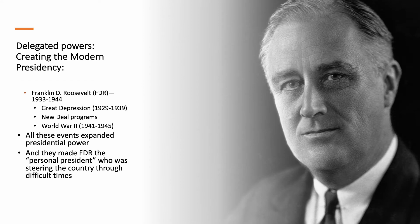The modern presidency really begins with Franklin Roosevelt in the 1930s. Congress did create a couple of agencies in the late 1800s — the Interstate Commerce Commission and the Sherman Antitrust Act — but it really took off in a big way with Franklin Roosevelt's presidency from 1933 to 1944. When he took office in 1933, the country had been in the worst depression in American history — a global depression called the Great Depression, lasting about 10 years. He took a very active role, proposing all kinds of programs, taking control over Congress, and even bullying the Supreme Court.